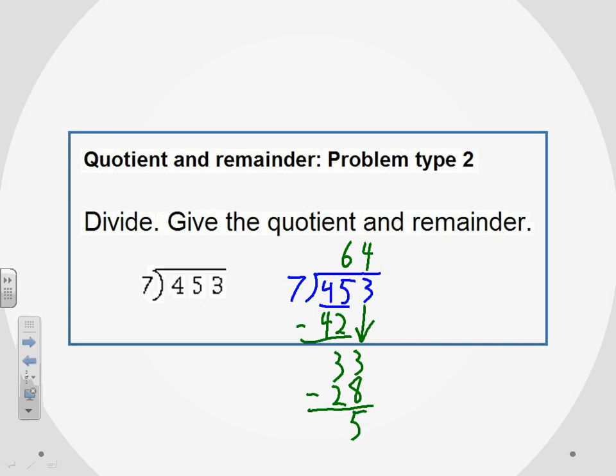At this point we have answered the question as it was given to us because we've run out of digits here. I can't bring anything else down, so the quotient is the 64 and the remainder is what we were left with when we were done, which was the five. So the quotient is 64 and the remainder is five.